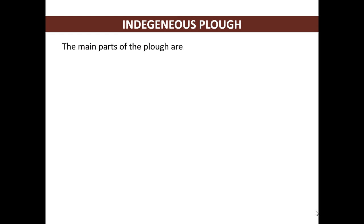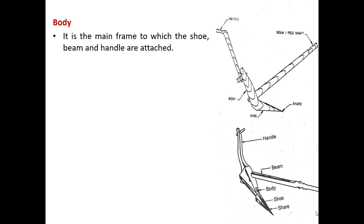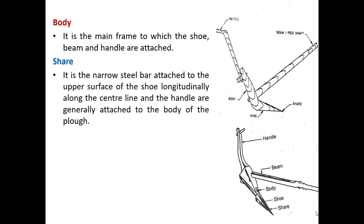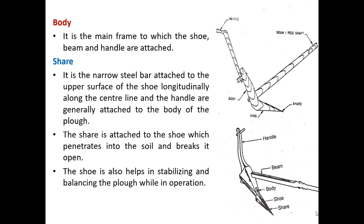Indigenous plow - the main parts of the plow are handle, body, shoe, shear and beam. The body is the main frame to which the shoe, beam and handle are attached, as you can see in the figure. The shear is a narrow steel bar attached to the upper surface of the shoe, longitudinally along the center line. The share penetrates into the soil and breaks it open. The shoe also helps in stabilizing and balancing the plow while in operation. The plow is provided with wooden beam and handle.